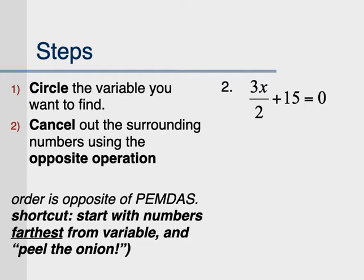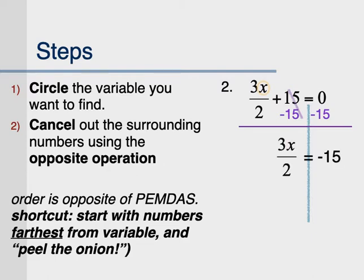We're going to go through the same process with one that's just a little bit harder, but the steps are the same. Start by circling your variable and drawing a line under the equal sign. Now if x is the center of our onion, what's the outermost layer — what's farthest away? If you're thinking plus 15, very good. So to cancel out the plus 15, you minus 15 from both sides — make sure you have one minus 15 on each side. Now your equation shows 3x over 2 on the left and negative 15 on the right.